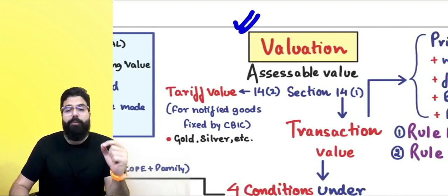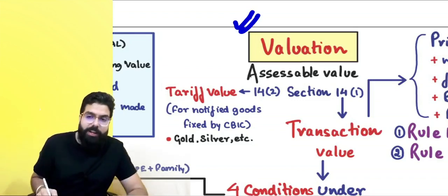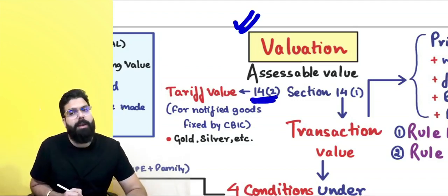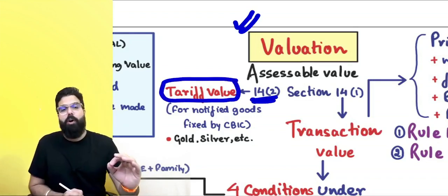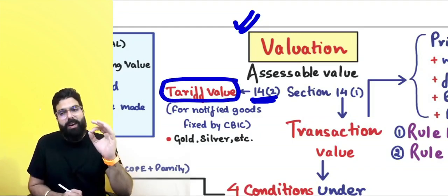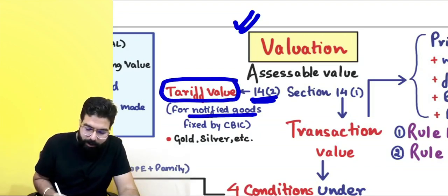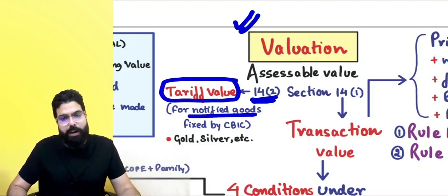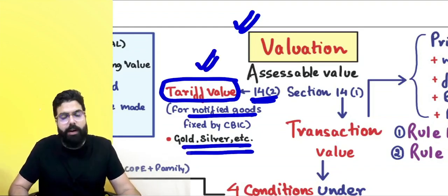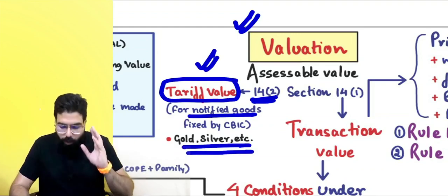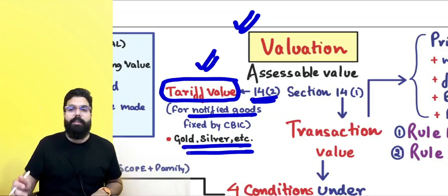For valuation under customs, Section 14 is applicable. Section 14(1) talks about transaction value, but transaction value is only applicable when tariff valuation is not applicable. If the government has notified a tariff value for your goods — for example, gold and silver — duty shall always be paid on tariff value and not transaction value. The CBIC notifies tariff values for such goods.